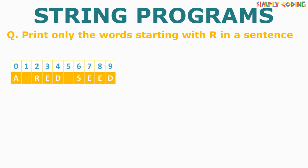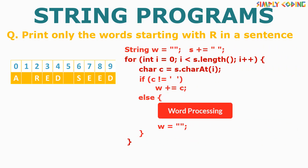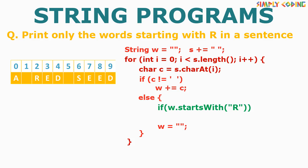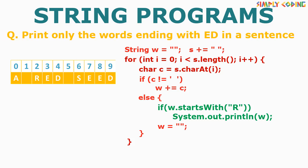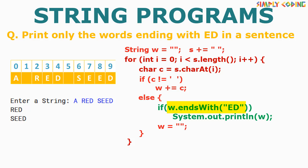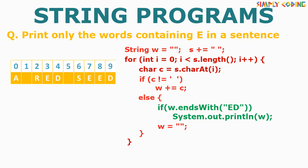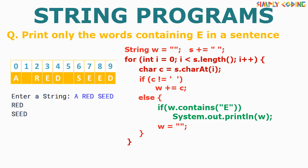What if the program was to print only the word starting with R? In that case, we will again take our template. Every time we get a word, we put an if condition where we will use the startsWith function to check if the word starts with R. If yes, then we will print it. You can get multiple variations: instead of startsWith, it can be endsWith for a specific string, like print all words ending with 'ed'. Or it could be print words which contain a given character sequence — like print all words which contain letter E, using the contains function.